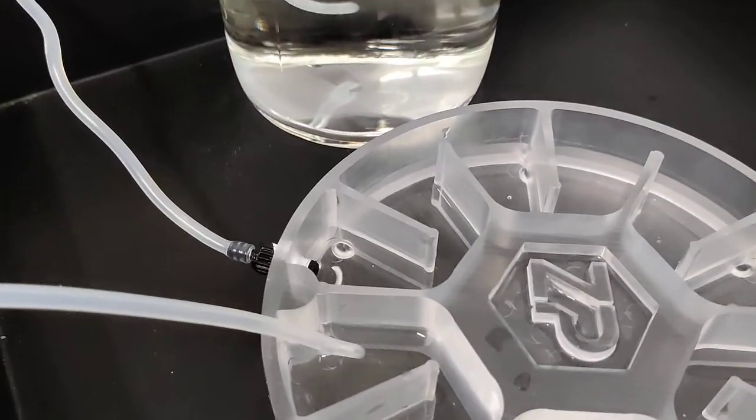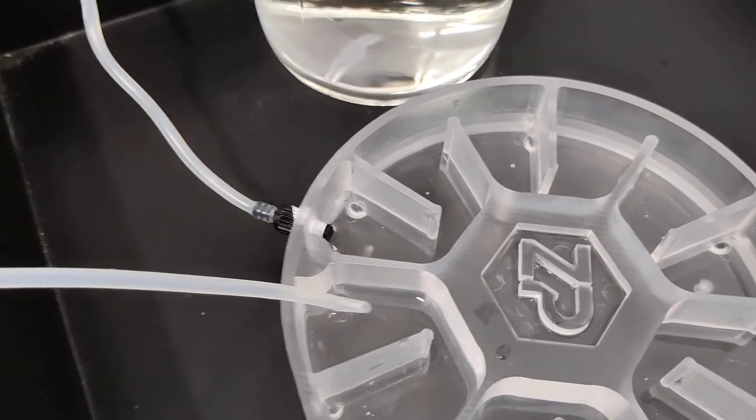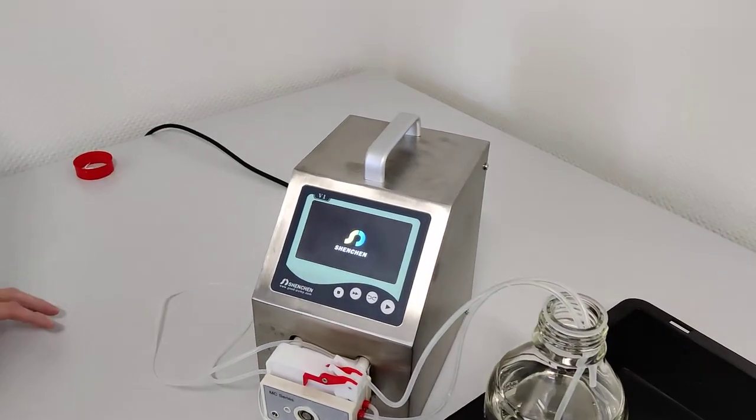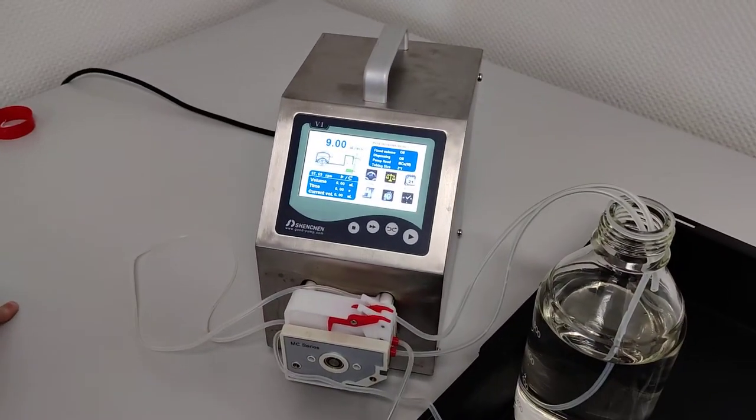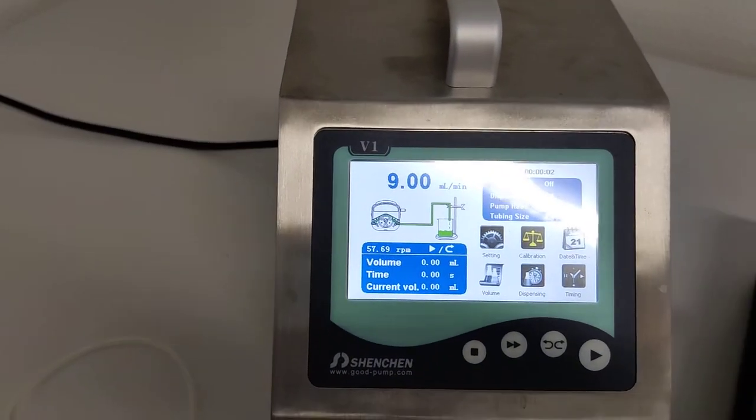So now we can see Anna has filled up approximately to the same height as the outlet. So please turn on the pump. There we go. And now we set it to nine milliliters per minute.